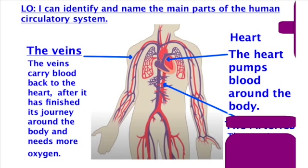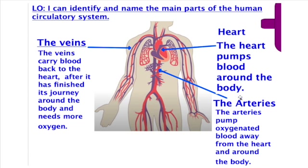We also have the heart. The heart pumps blood around the body. And then we have the arteries. The arteries are like the veins — they're tubes — and they pump the oxygenated blood away from the heart and around the body.